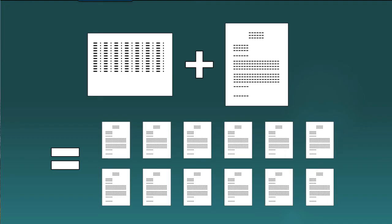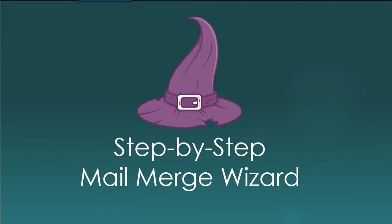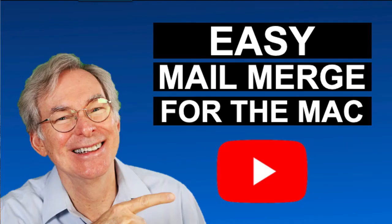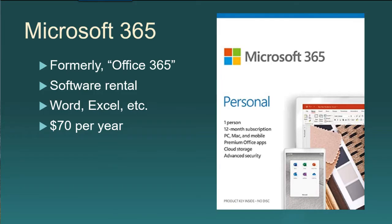To make it as easy as possible, we're going to use a feature in the Windows version of Word called the Step-by-Step Mail Merge Wizard. Wizards are wonderful features that guide you through certain difficult tasks. Unfortunately, the wizard is not available in the Macintosh version of Word. If you're using a Mac, take a look at our video on Easy Mail Merge for the Mac. I will be using the latest Microsoft 365 version of Word, but the procedure is practically identical for almost all older versions of Word.